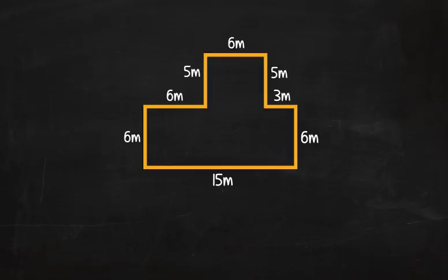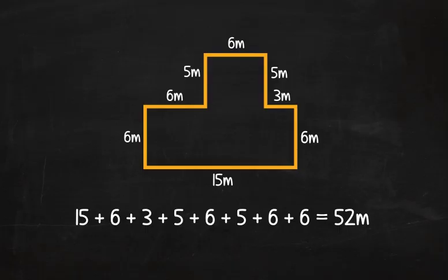Very good! Now, what about an odd shape like this? Just add up the sides. 15 plus 6 plus 3 plus 5 plus 6 plus 5 plus 6 plus 6 equals 52 meters.